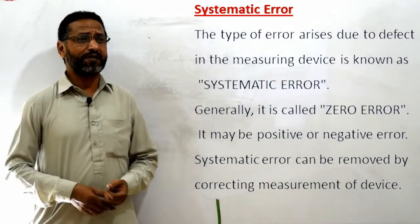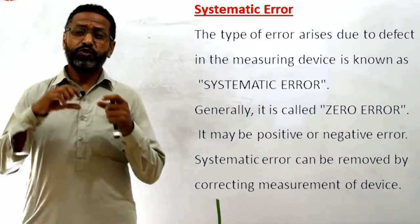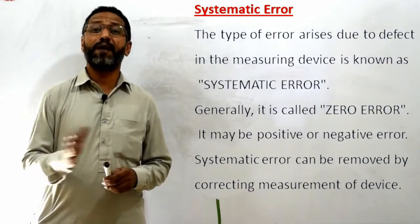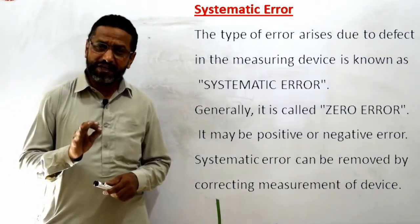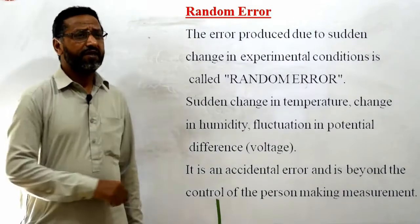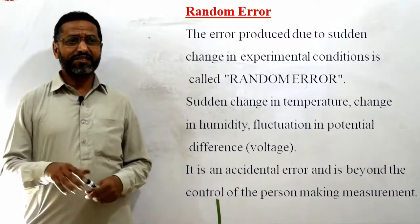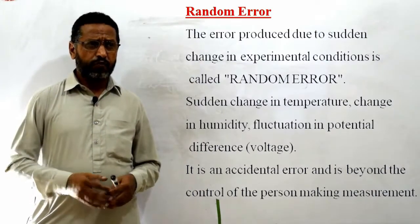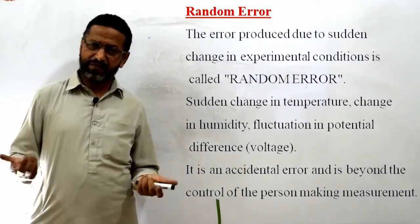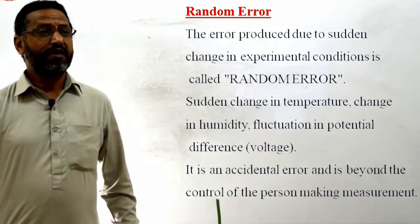Systematic error: the type of error that arises due to the defect in the measuring device is known as systematic error. Generally it is called zero error — it may be positive or negative. Systematic error can be removed by correcting the measurement of the device. Random error: the error produced due to the sudden change in experimental conditions is called random error — such as sudden change in temperature, humidity, or fluctuation in potential difference. It is an accidental error and is beyond the control of the person making the measurement.